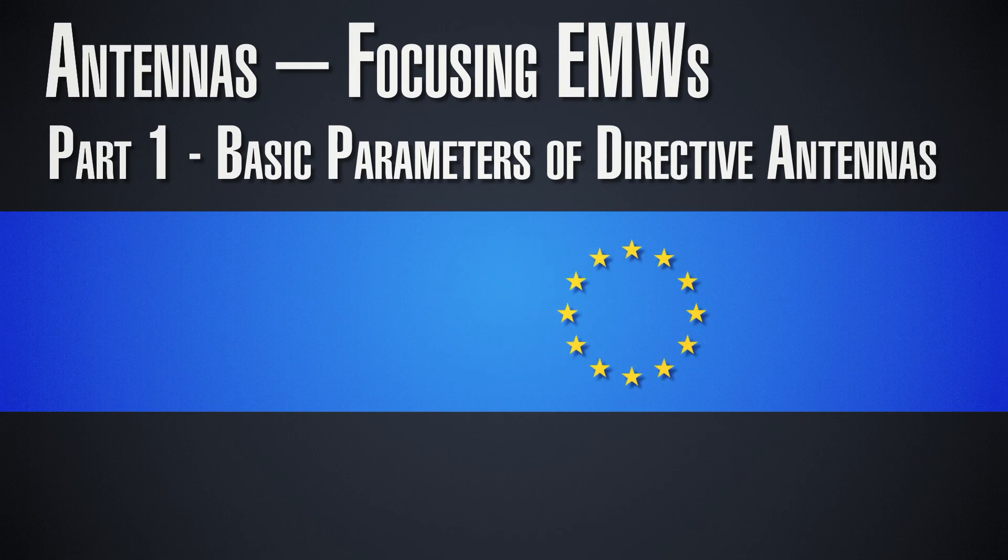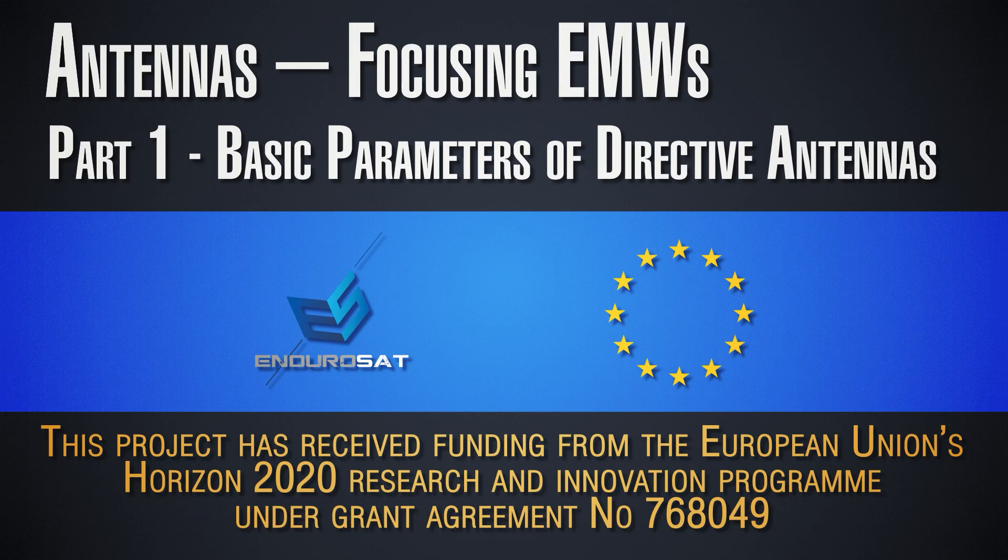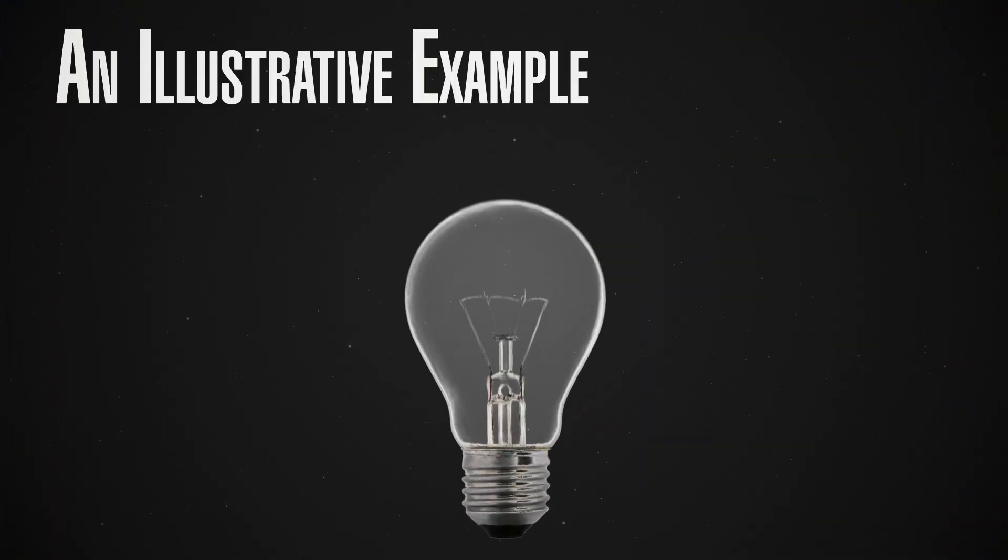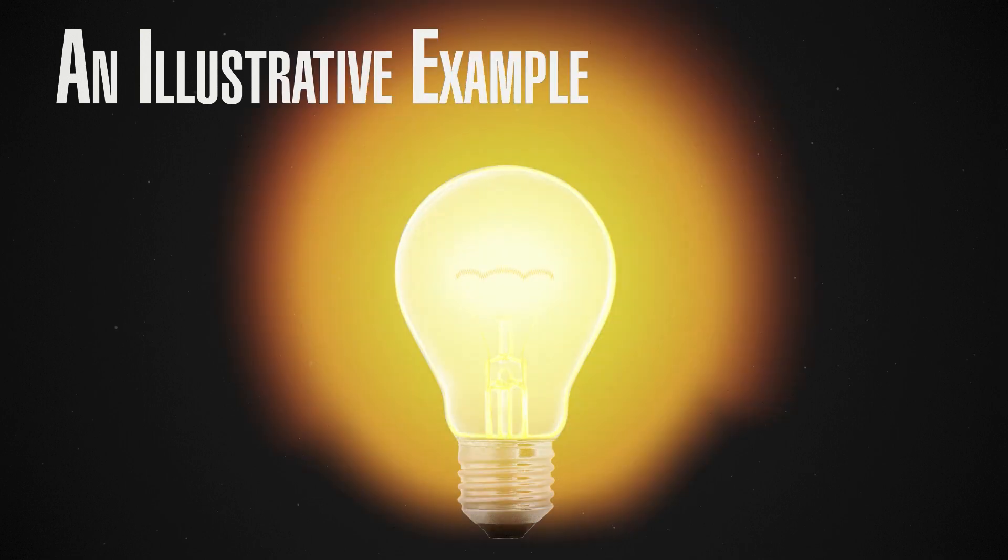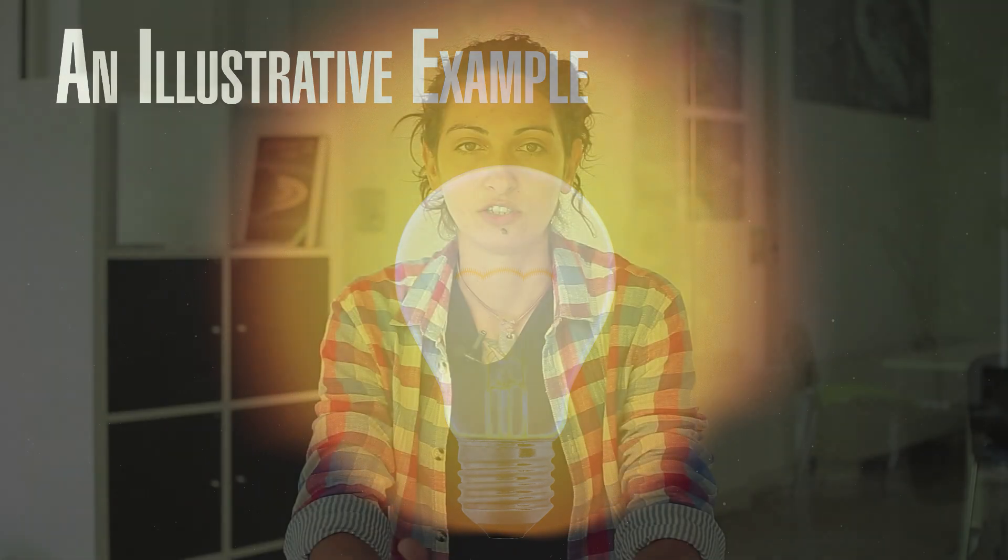Before we actually talk about antennas, let's consider a very simple example, a light bulb. If you imagine a light bulb being a perfect sphere, we can view it as an isotropic source. Isotropic means that it emits exactly the same way in all directions. So any observer will see exactly the same power flux from the light bulb no matter where they are.